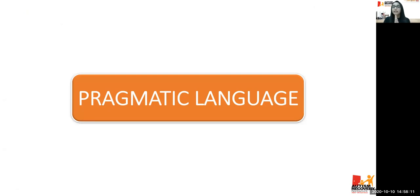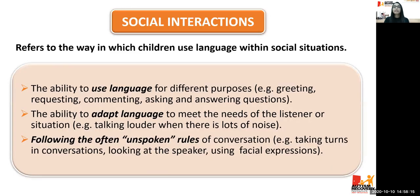Moving on to pragmatic language, which is social communication. Under ABLES, we have social interactions — how children use language within social situations. This includes the ability to use language for different purposes such as greetings, requesting, asking questions, commenting, and answering questions; the ability to adapt language to meet the needs of the listener or situation — for example, talking louder when there is lots of noise; and following the often unspoken rules of conversation like taking turns, looking at the speaker while talking, and using facial expressions.